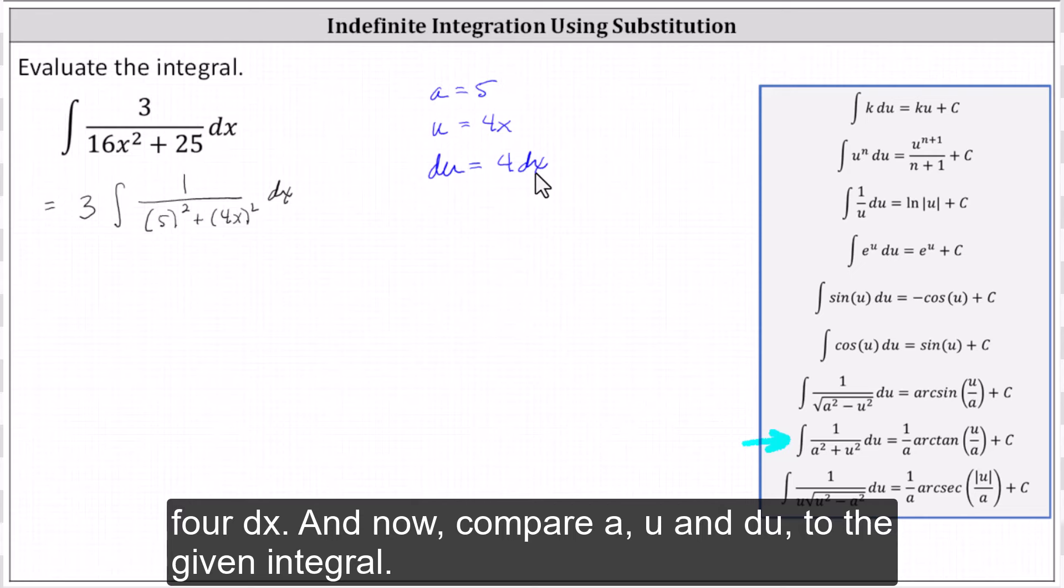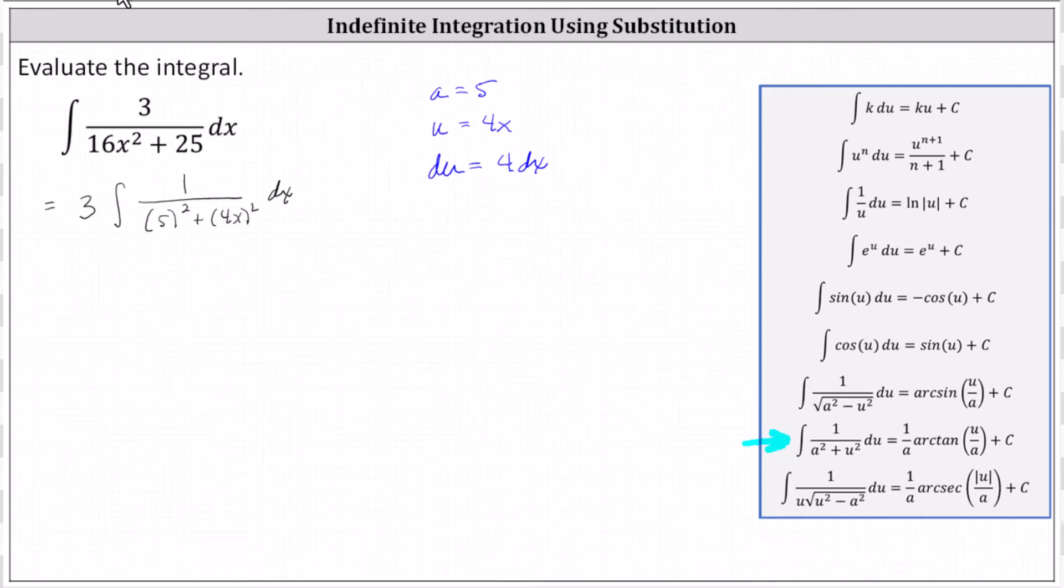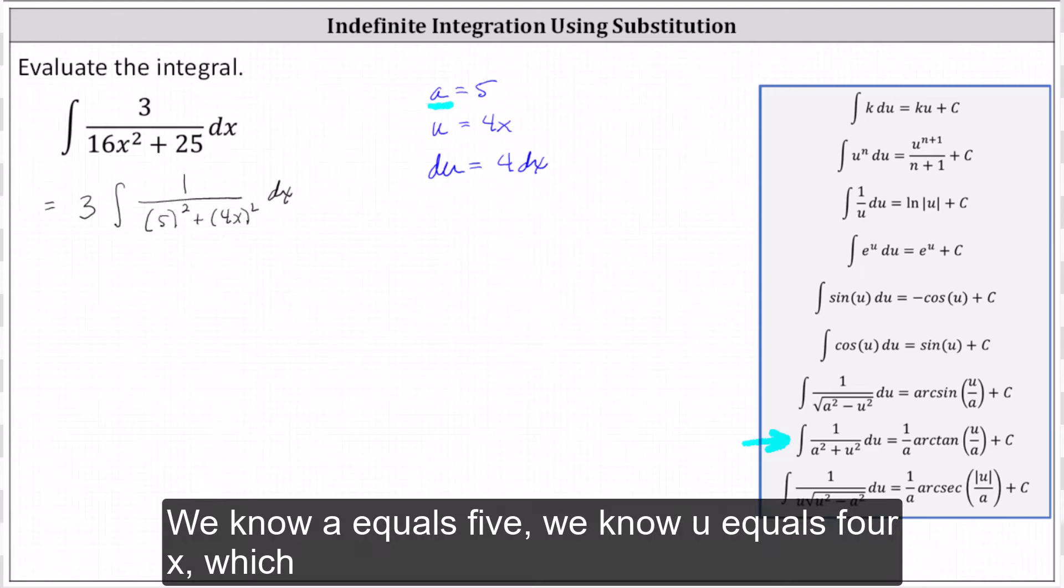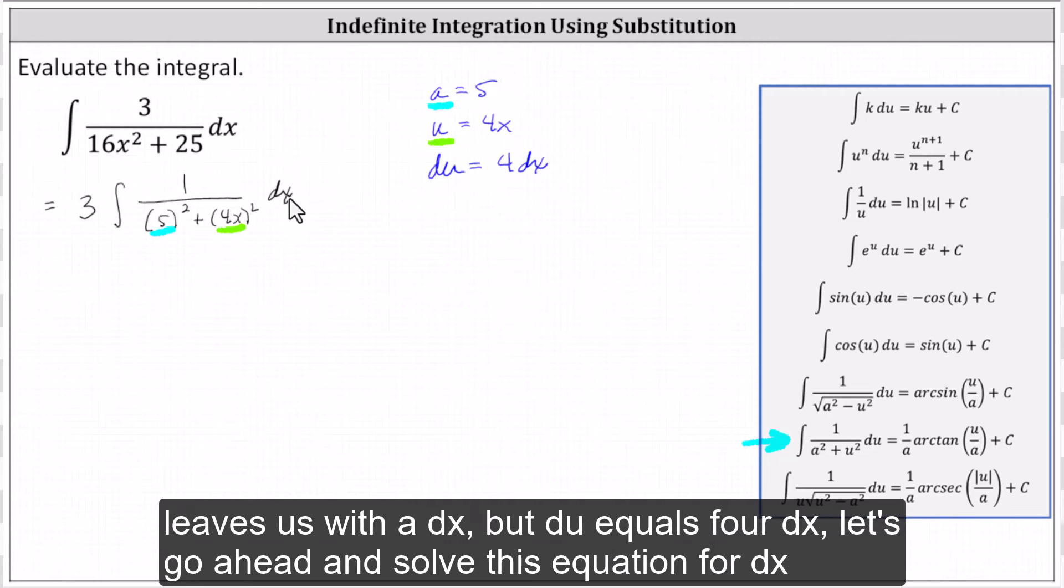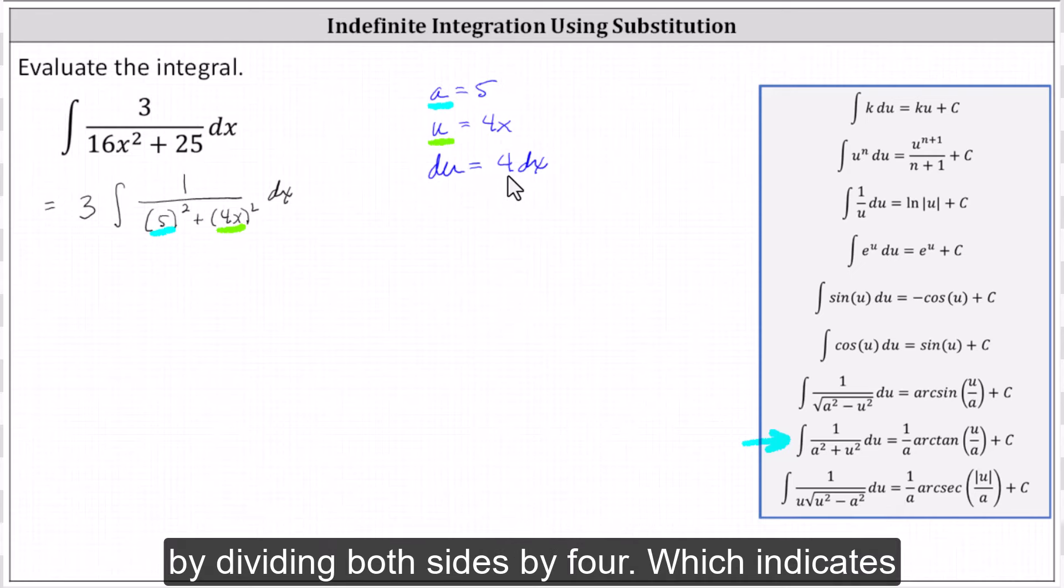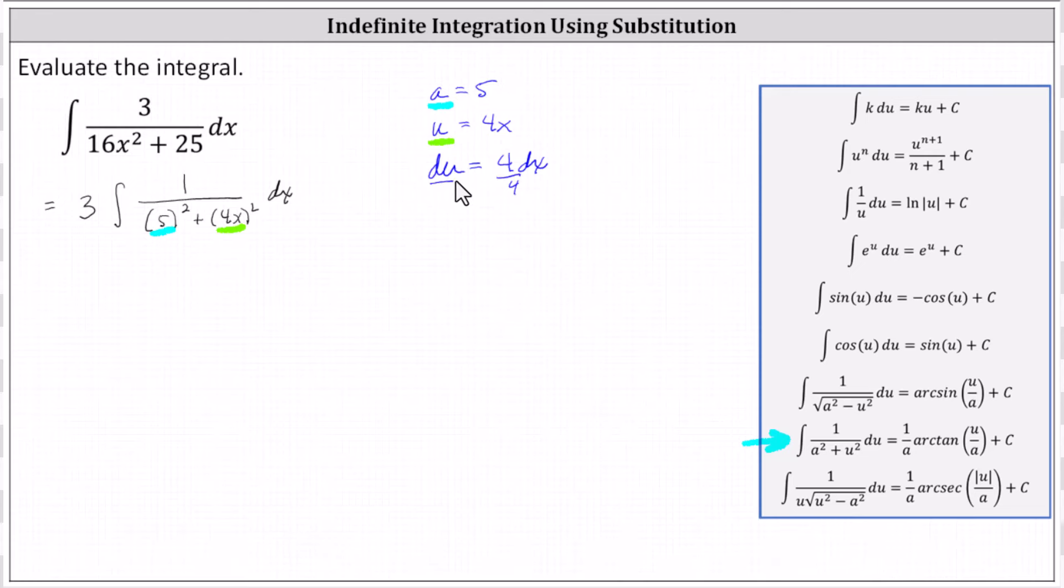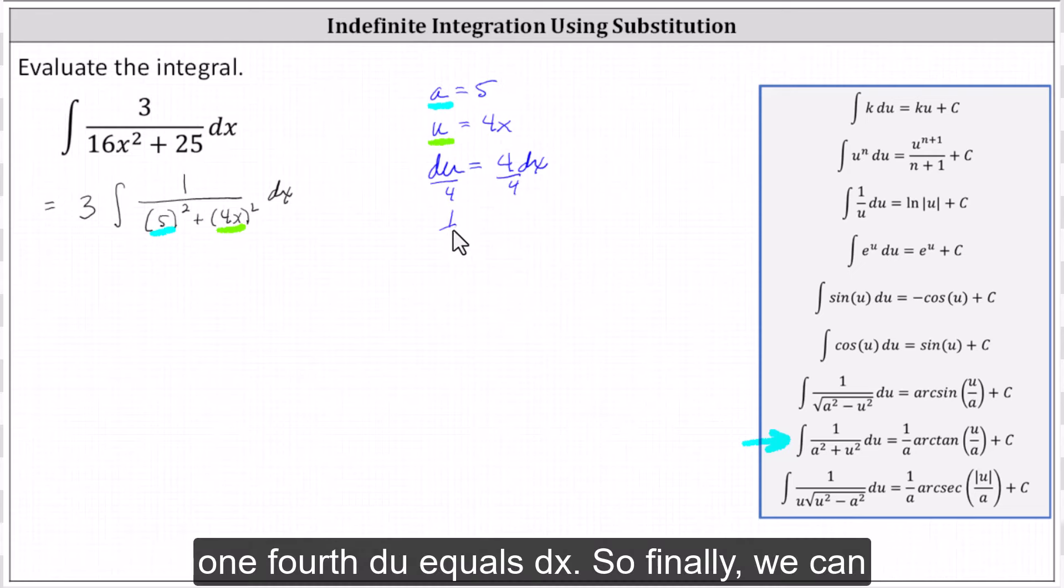And now let's compare a, u, and du to the given integral. We know a equals five. We know u equals four x, which leaves us with a dx, but du equals four dx. Let's go ahead and solve this equation for dx by dividing both sides by four, which indicates one-fourth du equals dx.